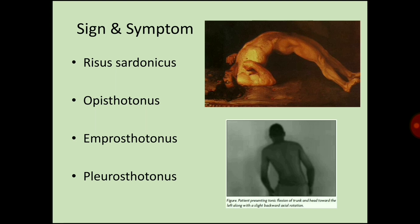Signs and symptoms include risus sardonicus, opisthotonos, emprosthotonos, and pleurosthotonos. Risus sardonicus, also known as rictus grin, is a highly characteristic abnormal sustained spasm of the facial muscles that appears to produce grinning. It may be caused by tetanus, strychnine poisoning, or Wilson's disease, and has been reported after judicial hanging.